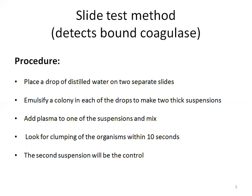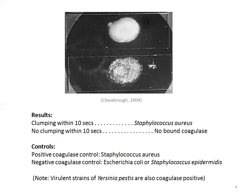The second tube without plasma serves as the control experiment. Clumping within 10 seconds indicates Staphylococcus aureus; no clumping shows a negative result for bound coagulase. For positive coagulase control, Staphylococcus aureus can be taken; for negative coagulase control, E. coli or Staphylococcus epidermidis can be used. Some virulent strains of Yersinia pestis are also coagulase-positive species.